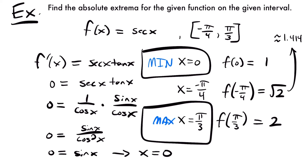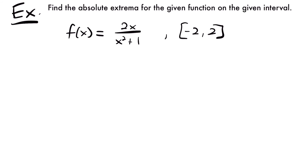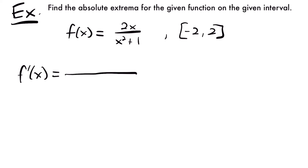Let's look at one final example. We want to find the absolute extrema for the function 2x divided by x squared plus 1 on the interval negative 2 to 2. Let's start by taking the derivative. This will require the quotient rule since we have a quotient of two functions: 2x divided by x squared plus 1.